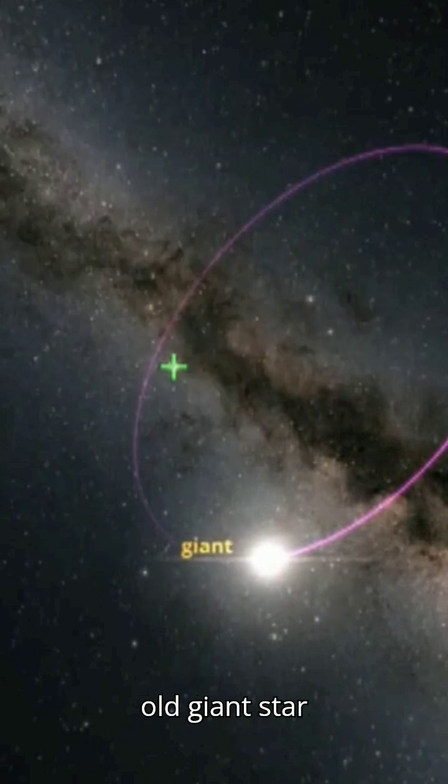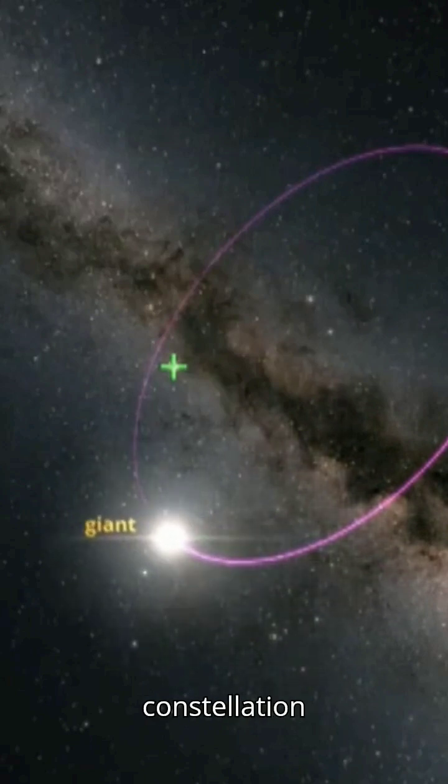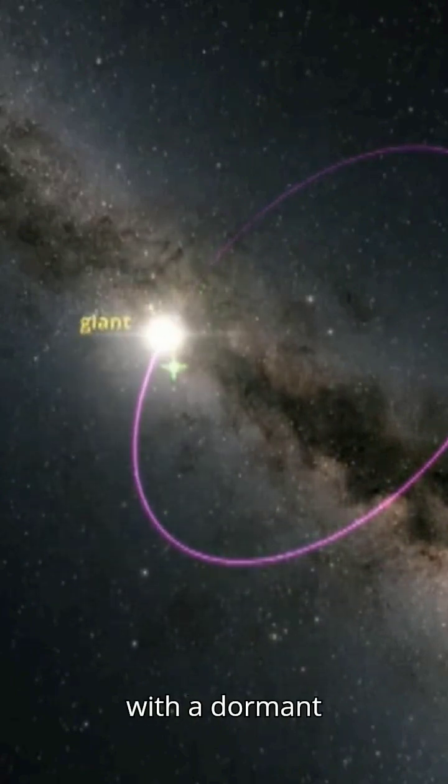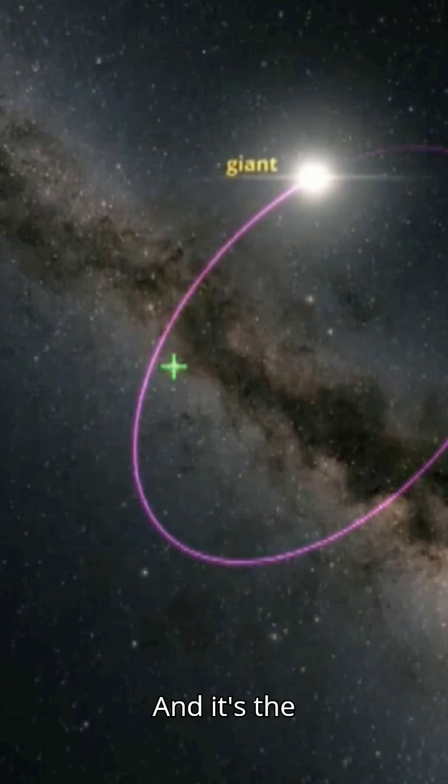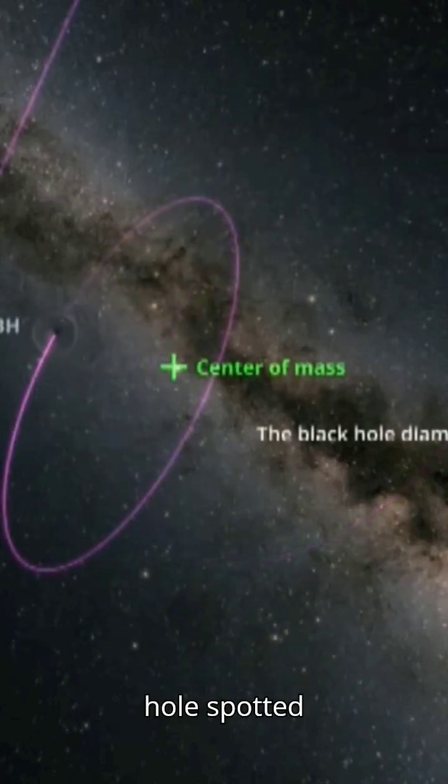The wobbling motion of an old giant star in the Aquila constellation revealed that it was in an orbital dance with a dormant black hole, and it's the third such dormant black hole spotted by Gaia.